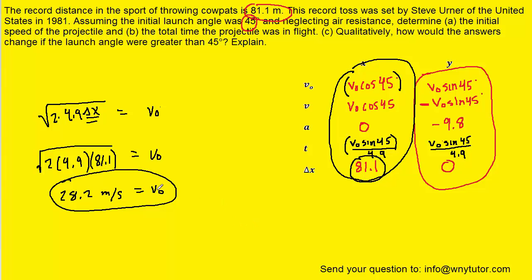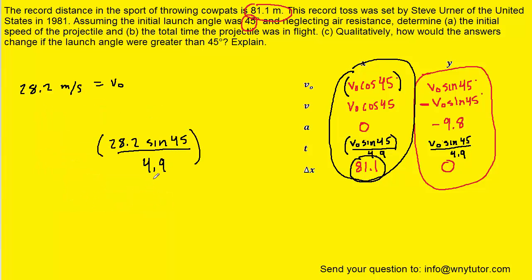Now that we have that answer, we can easily answer part b which wants the total time. We can take our expression for time, V0 sin 45 over 4.9, and plug in the value of V0 we just determined. When you crunch this down you should get roughly 4.07 seconds. That's the correct answer to part b.